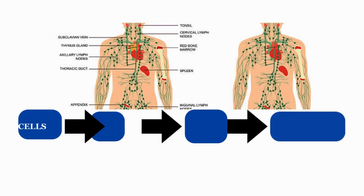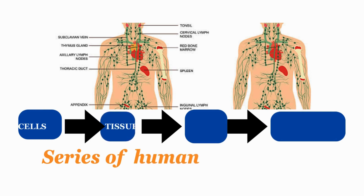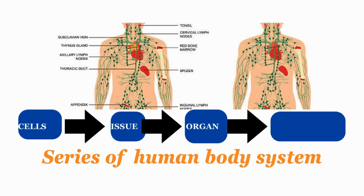The levels of biological organization are: cells, tissue, organ, and system level.